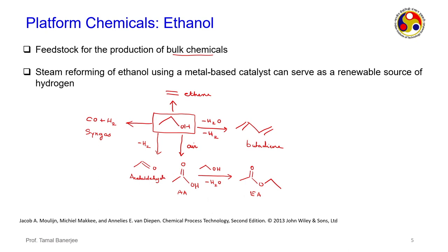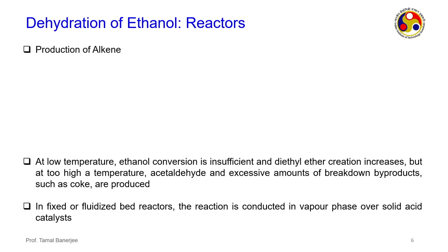Looking at the dehydration of ethanol in detail: you remove one water molecule in a highly endothermic reaction (ΔH ≈ +45.3 kJ/mol) to form ethene. This reaction from biomass-derived ethanol is very popular in Brazil and USA. There is also a two-step route: two moles of ethanol first form diethyl ether (ΔH ≈ −24.4 kJ/mol), and then the diethyl ether decomposes irreversibly to form ethene and water.